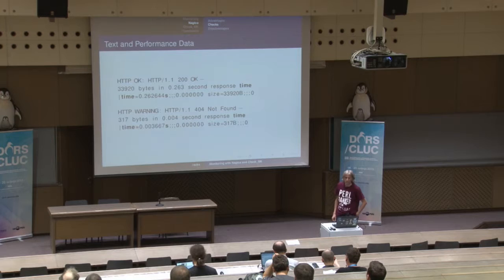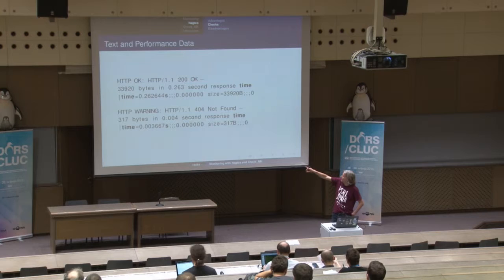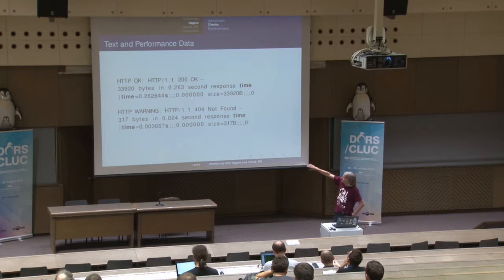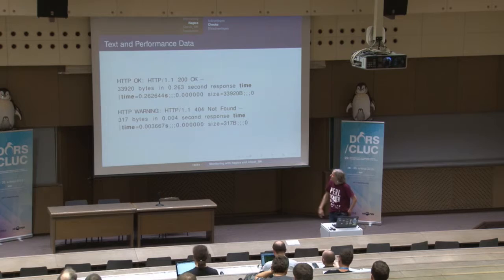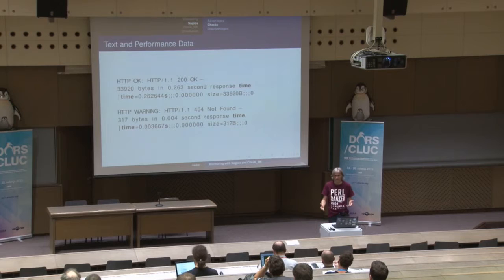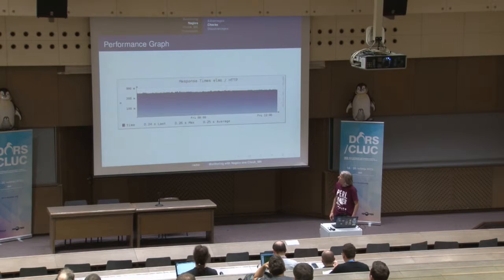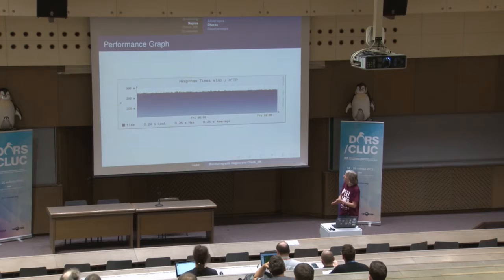Here are two examples for the output of a check in Nagios. In the first case, you have a web server saying everything is OK, with some text showing how many bytes the response was and the time. After the pipe character is performance data you can use for graphs. In the second example, you get a 404 — there's no real content delivered by the web server — and that ends up in a Warning state. With the performance data, you can create performance graphs to see what's happening over time. This web server is well-behaved — it doesn't deviate from the normal response time.